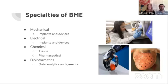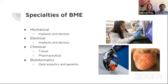To begin with the specialties of BME, we're just going to do a little bit of an overview. We split these into a few main categories. Of course, each of them have subcategories, but to begin, the main categories and specialties of BME are mechanical, electrical, and bioinformatics, which happens to be the most recent one.